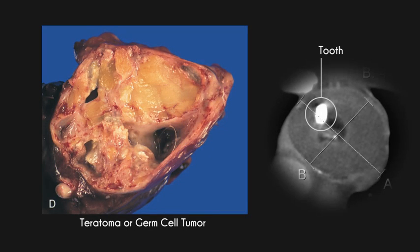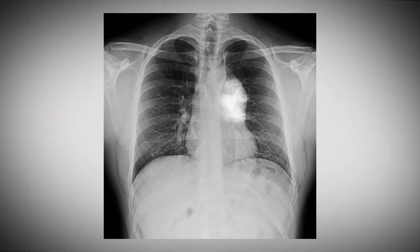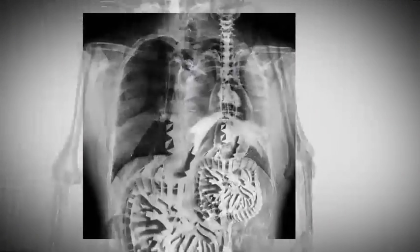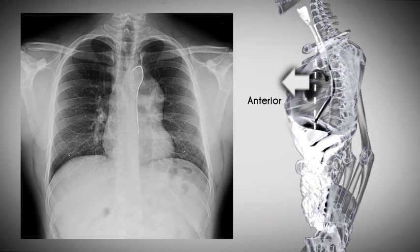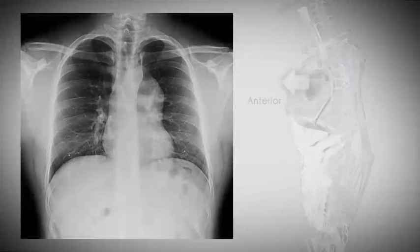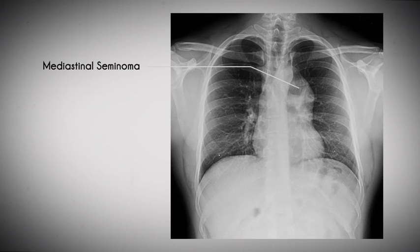The anterior mediastinum is the most common location for an intrathoracic teratoma. The second patient is a 25-year-old man with fatigue. The radiograph shows a lesion obliterating, or silhouetting out, the normal contour of the pulmonary outflow tract. Since the aortic knob is still visible, as well as a portion of the descending thoracic aorta, this mass is located in the anterior mediastinum, not in the posterior mediastinum. When looking at the cross-sectional CT imaging, the lesion is confirmed to be an anterior mediastinal mass. This is a mediastinal seminoma, which, like the teratoma, is a type of germ cell tumor.